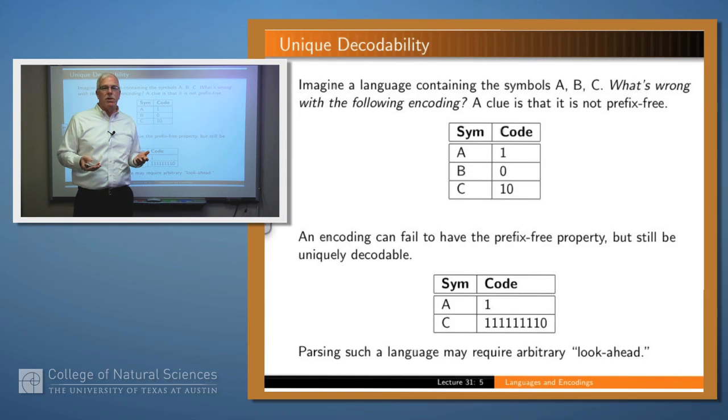So what would it mean for it not to be prefix-free? Well, here's a simple encoding for a language that contains the symbols A, B, and C. We've assigned the code 1 to A and 0 to B and 1, 0 to C. Well, what's wrong with this? Well, here's the problem. If the receiver gets a 1 followed by a 0, he won't know in general whether that's encoding a C or whether it's encoding an A followed by a B. And you can see that this is not prefix-free because the encoding for an A is an initial prefix of the encoding for C. And that's generally a bad property. So we want to avoid this sort of encoding.